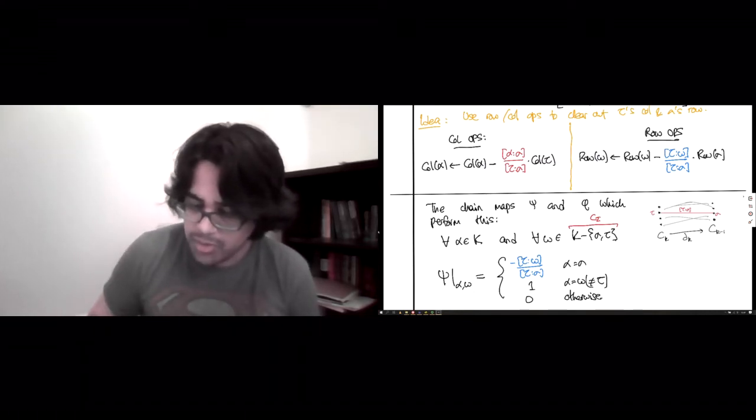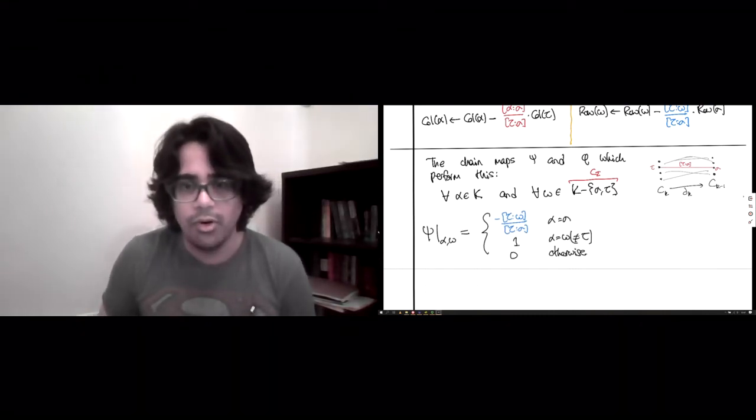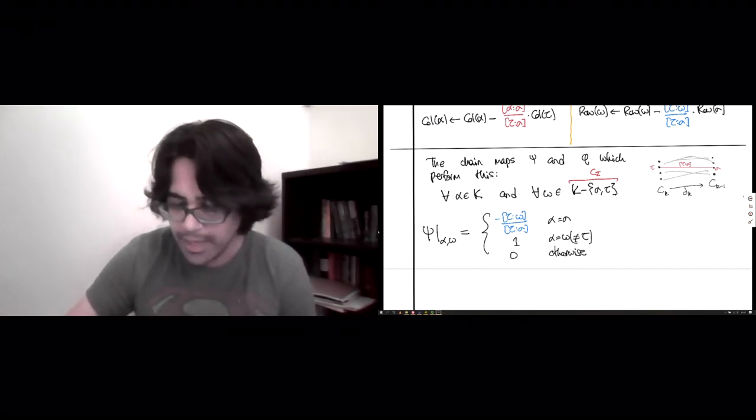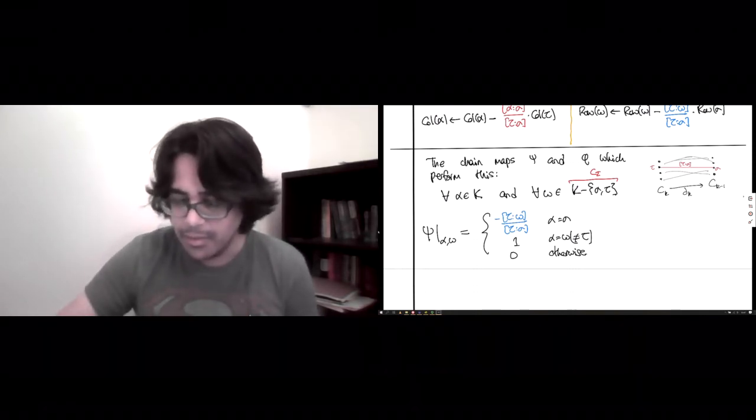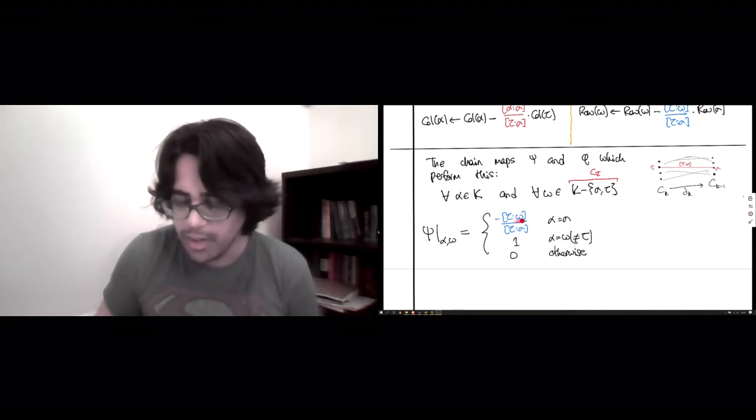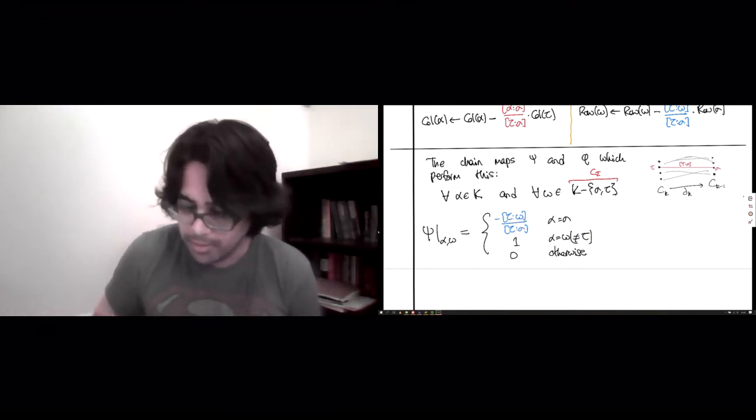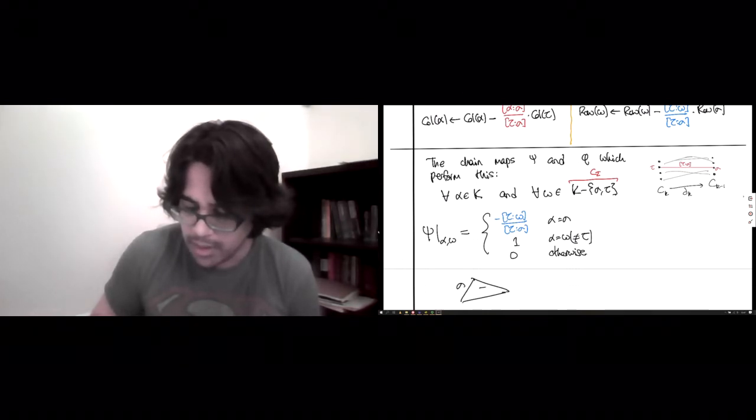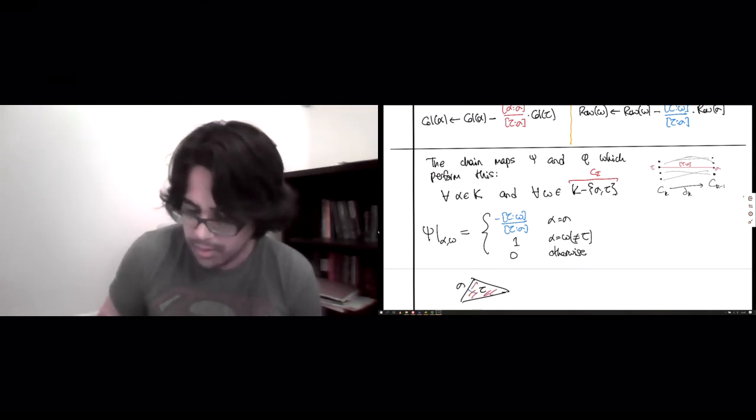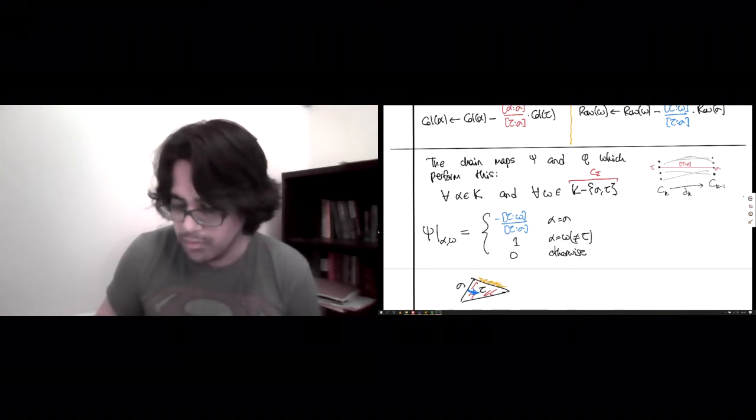So, this map is almost the identity if you think about it. Anytime alpha and omega are equal, they get sent to 1. So, it only deforms when alpha is sigma. What it's doing is it's taking sigma and replacing it with all the other omega for which this is non-zero. They're going to be the other faces of tau that are not sigma. So, if you think about the picture for a second, so here is sigma, here is tau. So, this tau is filled in and this was the pairing. Then, the image of sigma is going to be non-zero for those two. So, it's going to push sigma with some algebraic signs to the two other boundaries of tau.